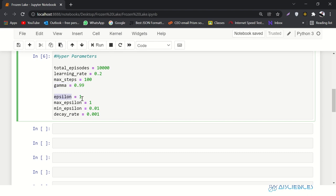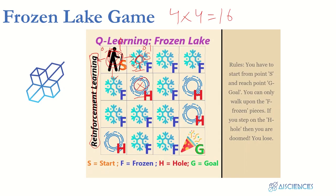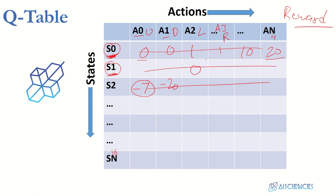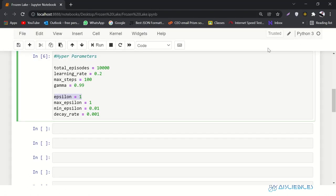Epsilon is 1. Epsilon controls how many times you want to explore the map versus exploit the table. If you want to explore you'll be making new moves and filling in values. Once your table is filled you'll stop exploring and just read the best values — that's exploitation. Initially epsilon is 1, which means maximum exploration. Its range is from 0 to 1.